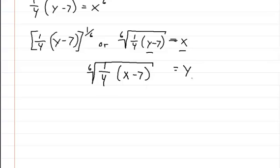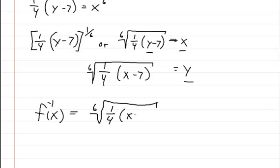To finish it off, all you need to do is just change the y to f(x). So it's going to be f inverse of x equals the 6th root of 1/4 times (x minus 7).